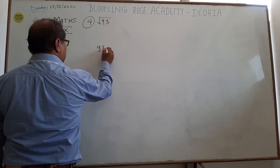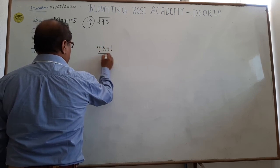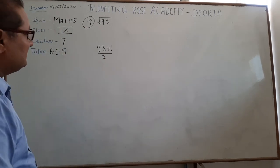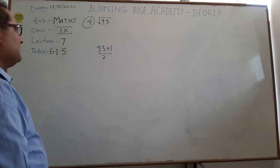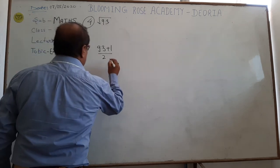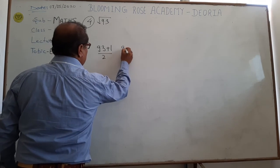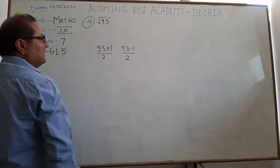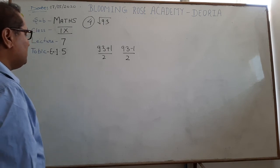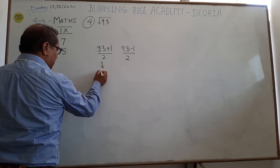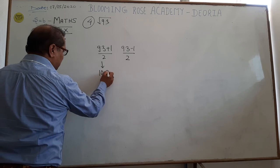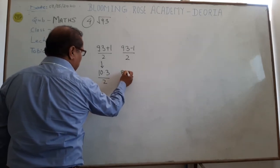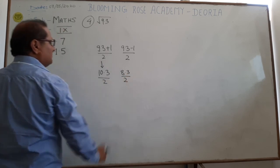If this 9.3 plus 1 by 2, this student you have to remember to describe the number line. Second, 9.3 minus 1 by 2. Student, if you have to see the number, what they have, I have to remember to select 10.3 by 2 and 8.3 by 2.